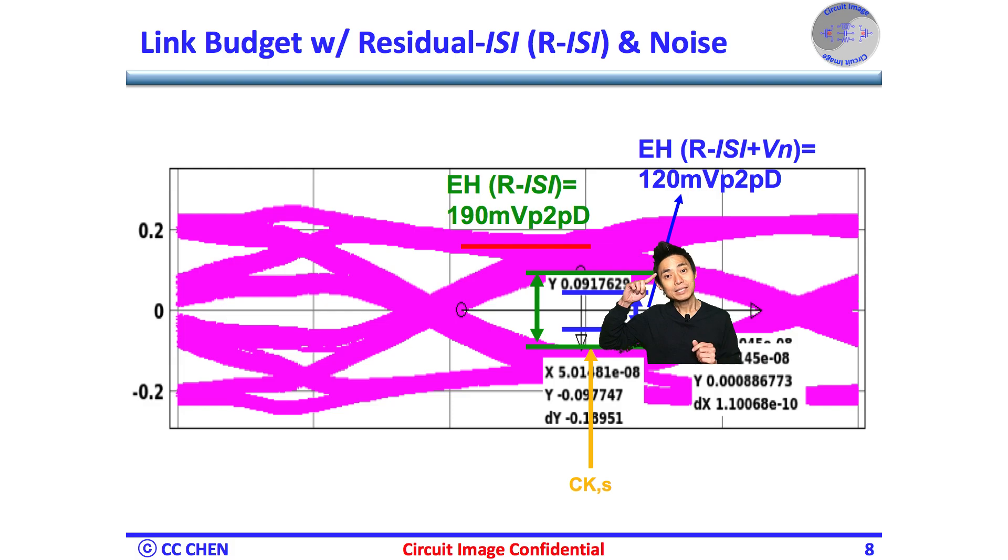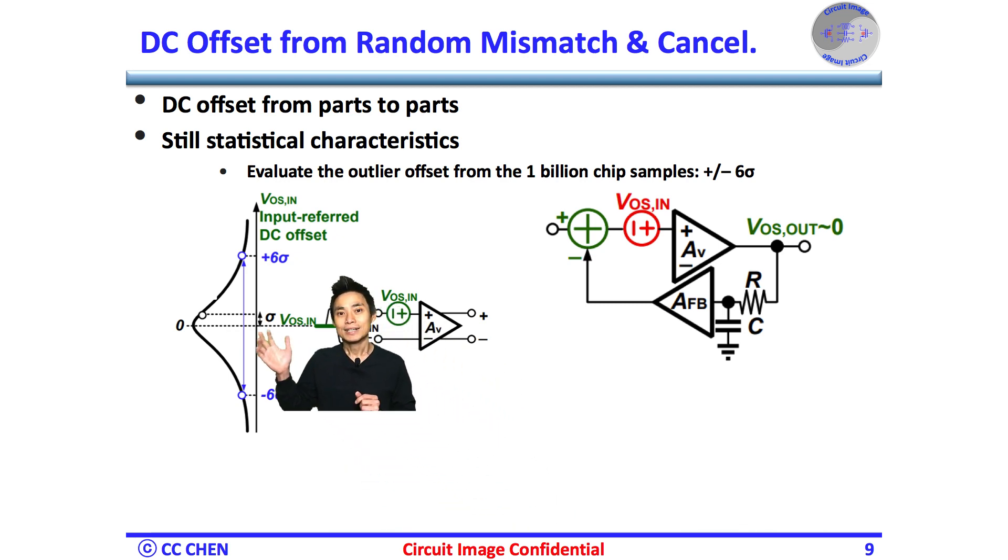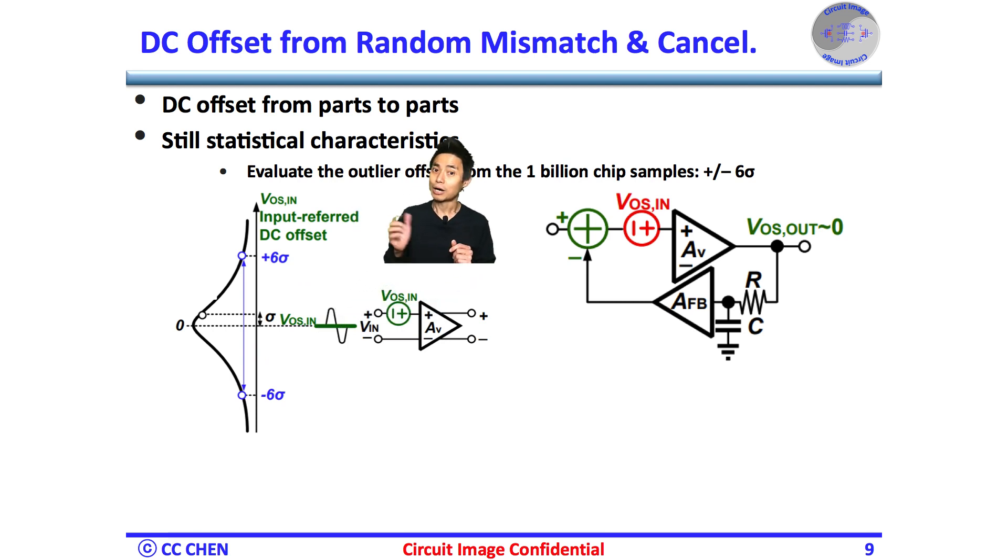Think about the device mismatch images for 5 seconds. Correct, DC offset, as we discussed in the RX DC offset cancellation video, is the random mismatch of the device that causes different DC offset between signal paths, and it's a statistical characteristic.